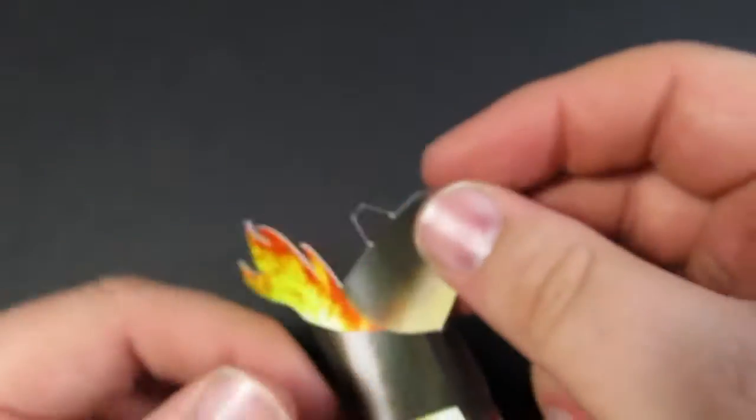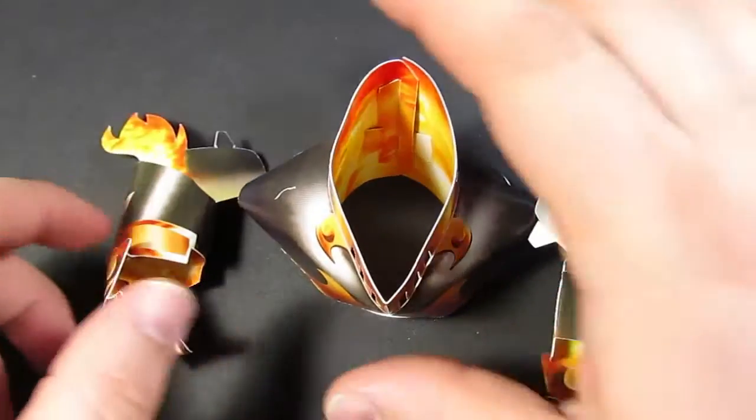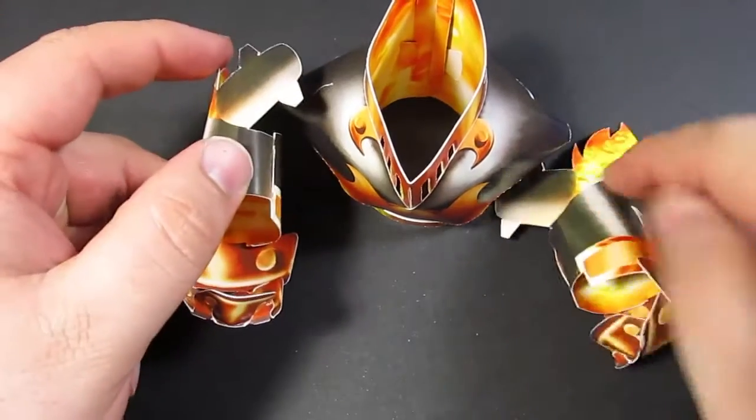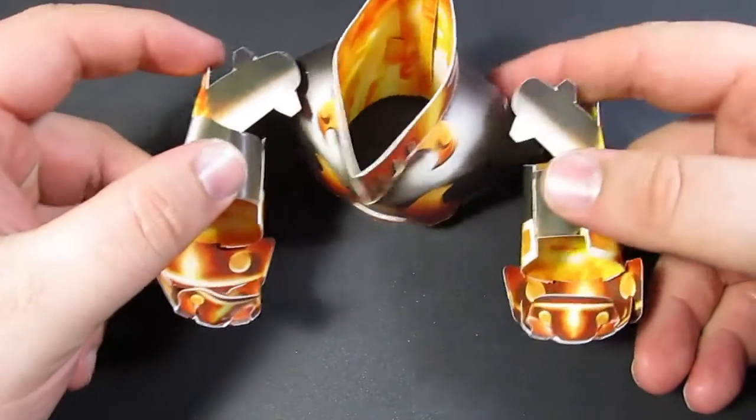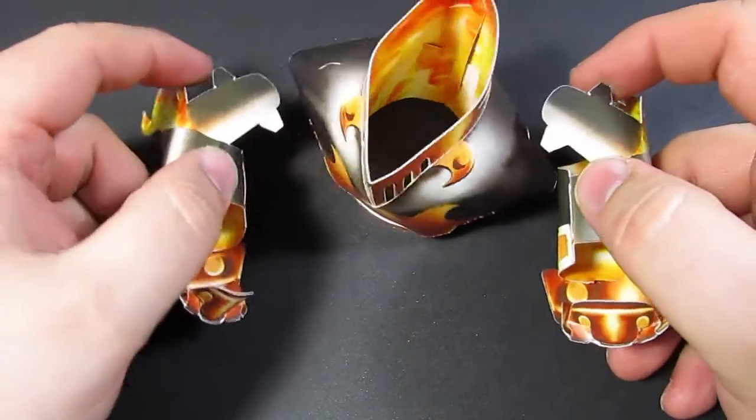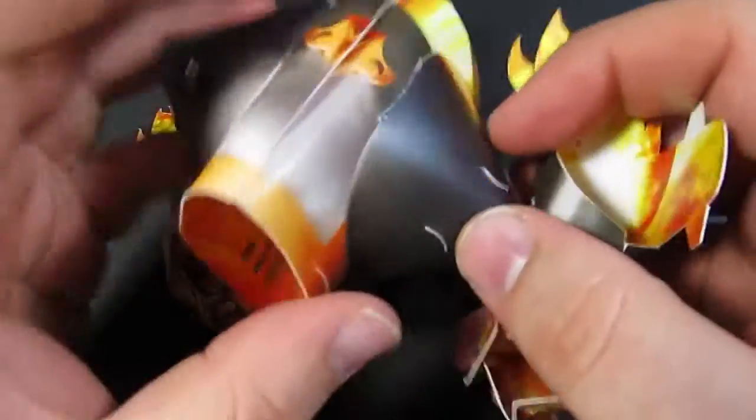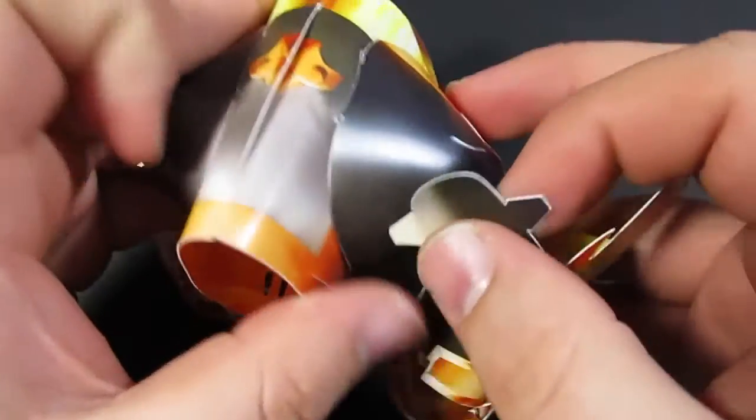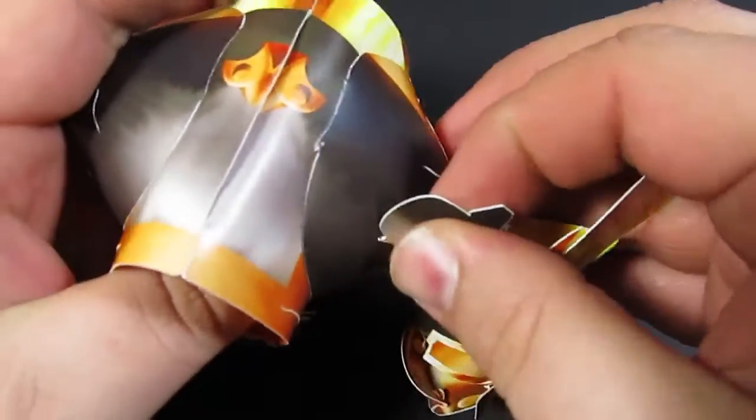Repeat this process with the other arm. Once you have both arms finished, you can insert them into the body. The hand should be folded in and that's how you know which arm is right and left. Insert the first arm. Use these two tabs into the slots at the back of the model. There you go. Repeat with the other arm.